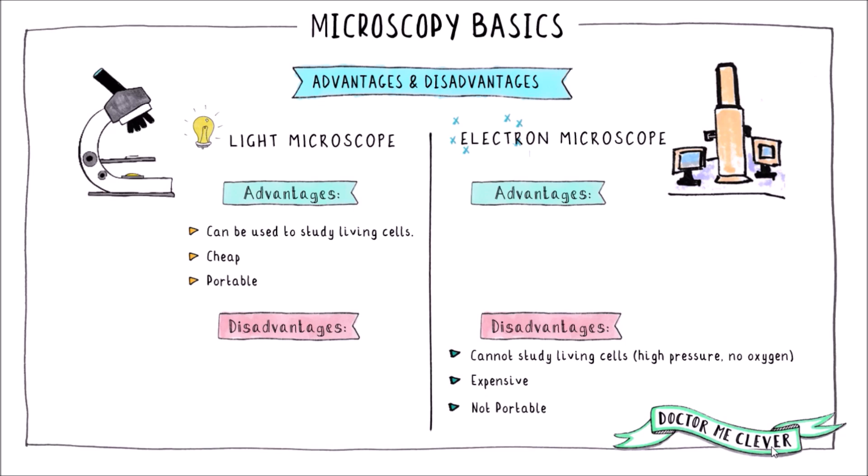The light microscope is cheap and portable it is easily moved from one lab to another whereas the electron microscope is very expensive it's absolutely huge and takes a great deal of effort to move. Now the overriding advantage of an electron microscope though is its amazing ability to produce high magnification and high resolution images. The magnification and resolution of a light microscope is much lower in comparison.